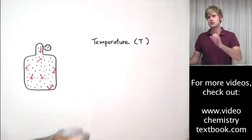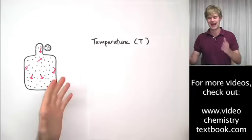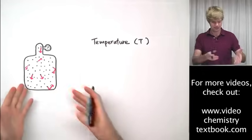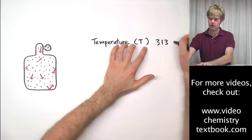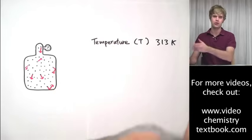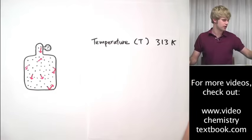Temperature for gases should always be reported in Kelvin. So we could say, for example, that the temperature of this guy here is 313 Kelvin. That's how hot these gas particles in the sample are.